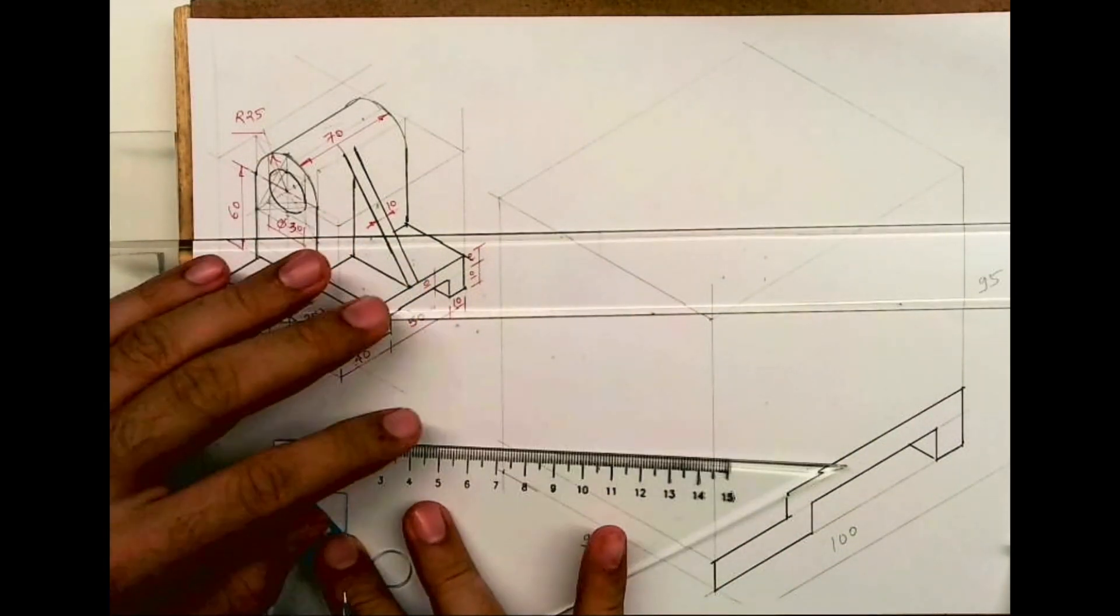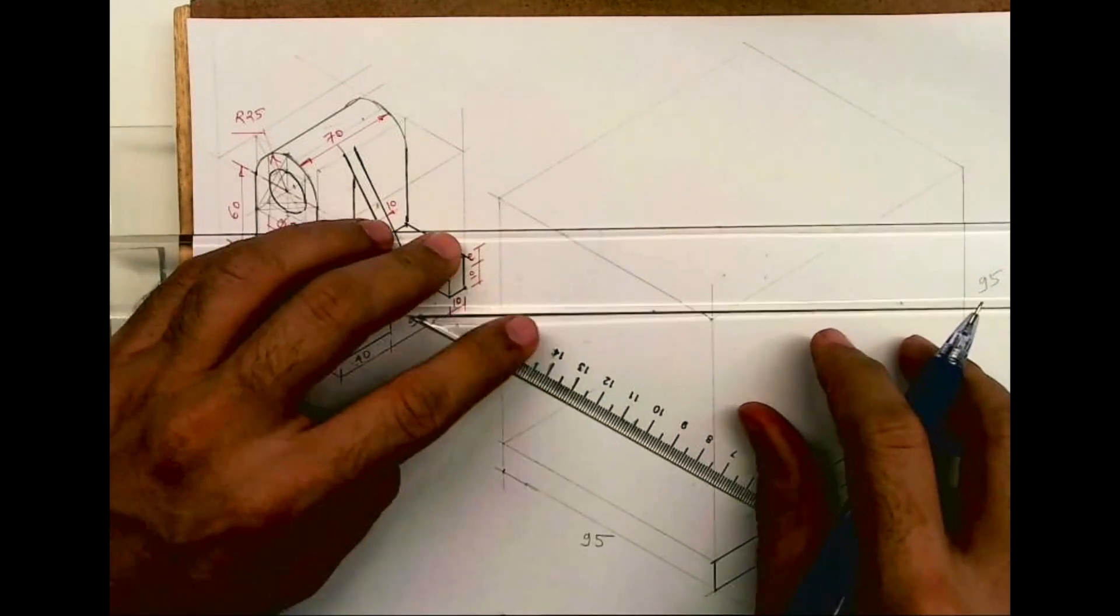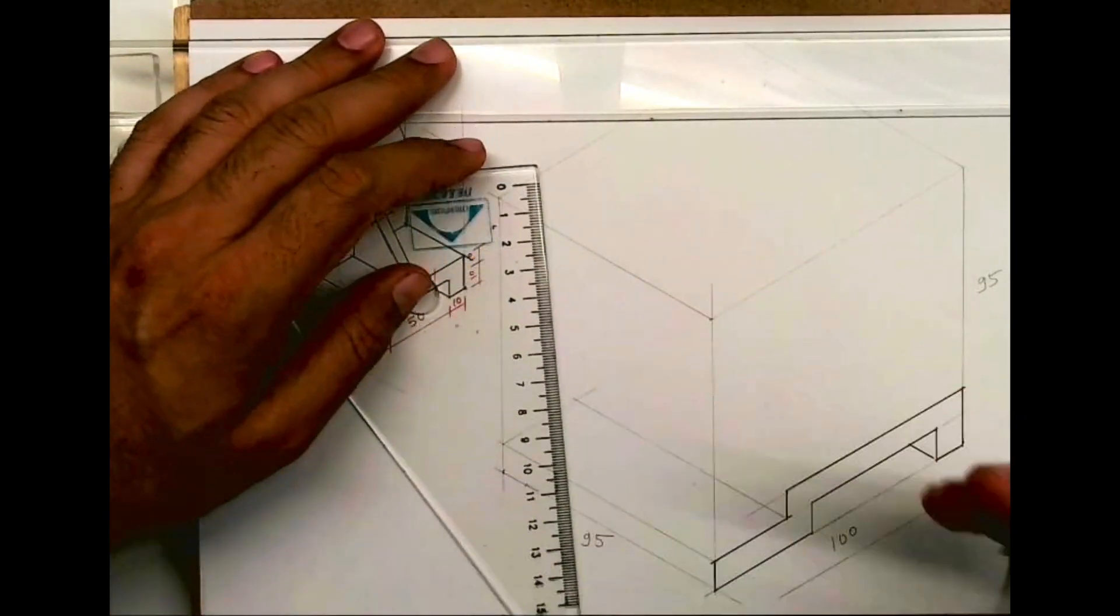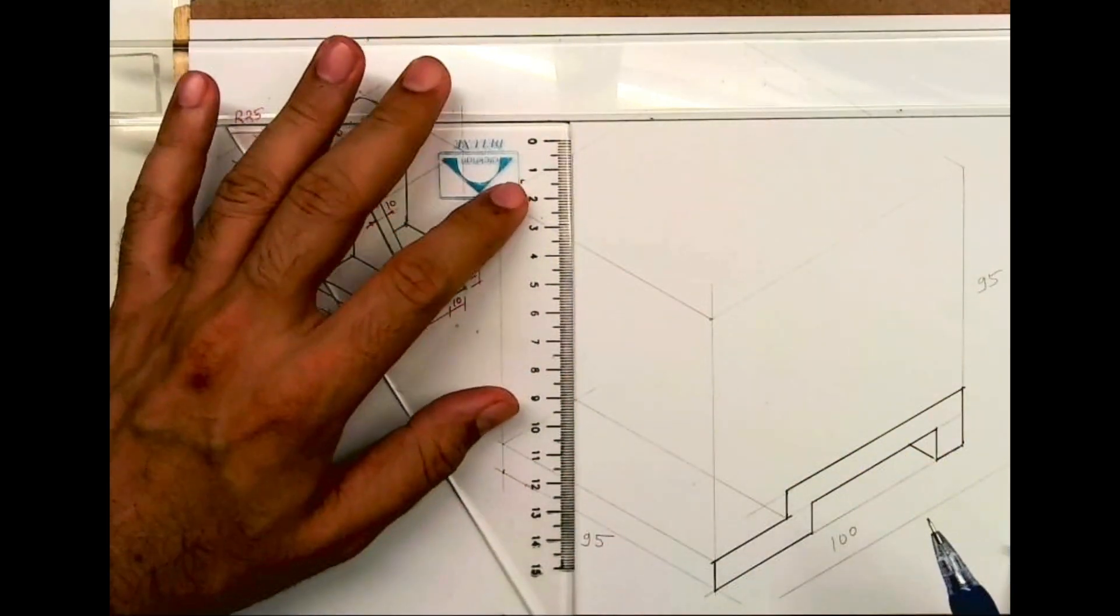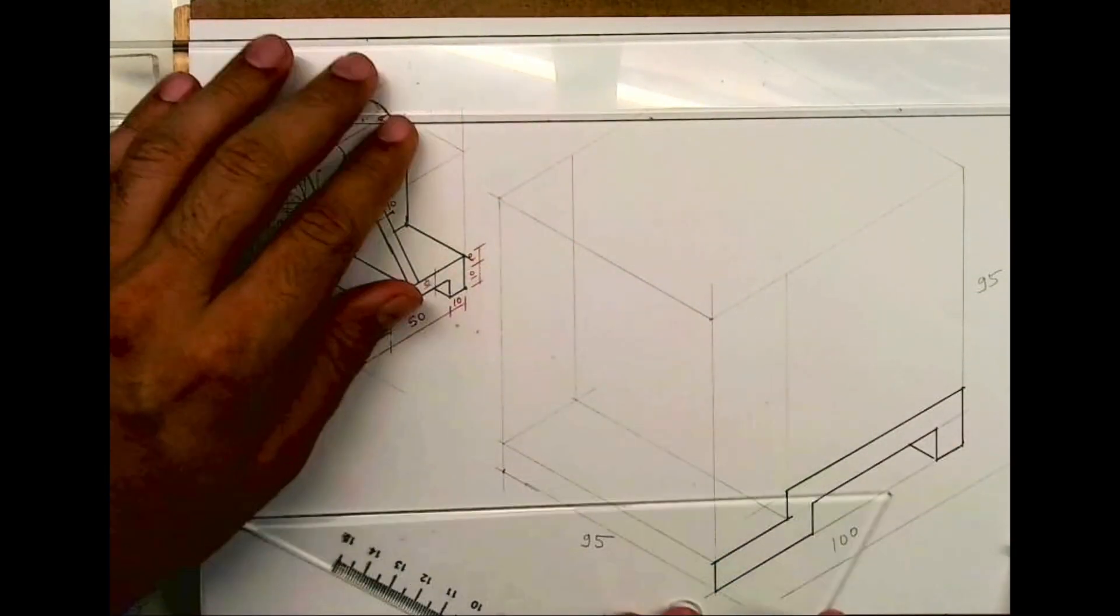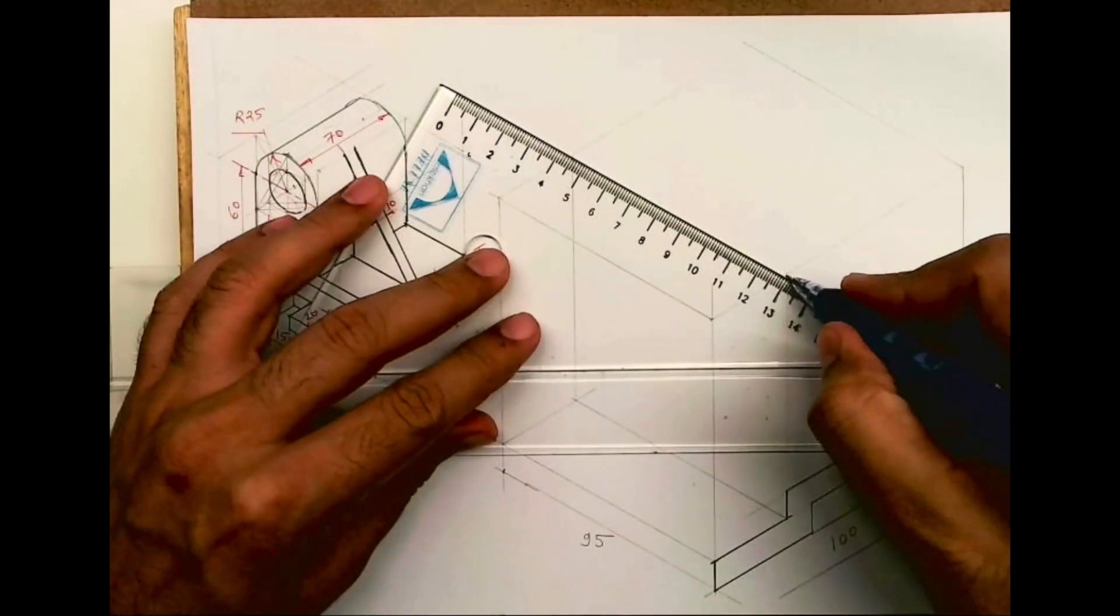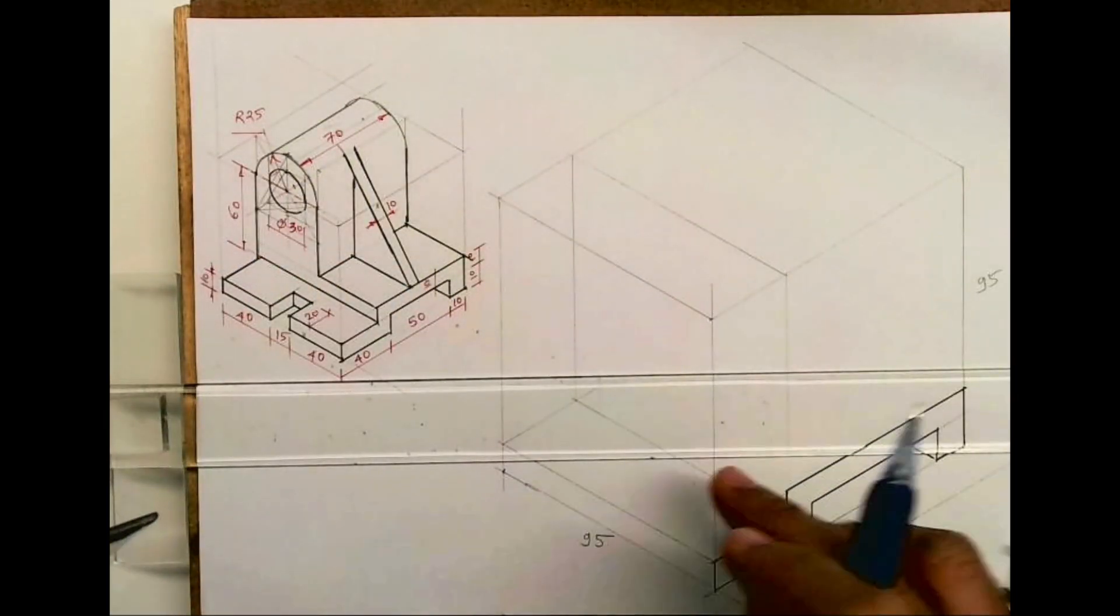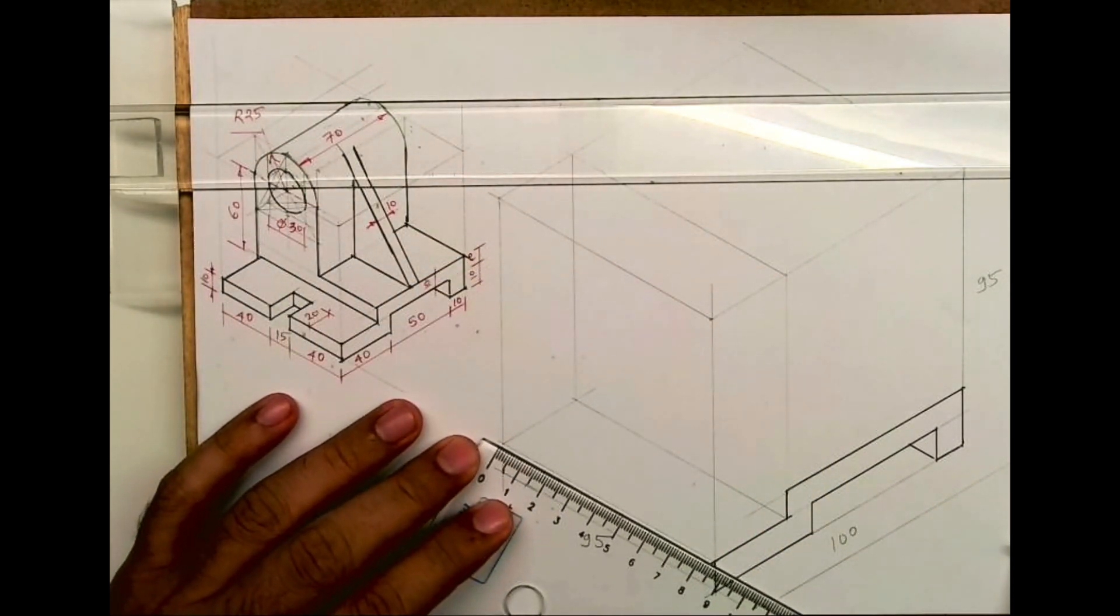From here you draw inside. From here it is inside by 30. This is how you'll get this part. Then you can take this from here also, I can draw this up. So we know it is behind, this entire part is behind by 30. So we have to start from here. Now this is 40, 15, 40.